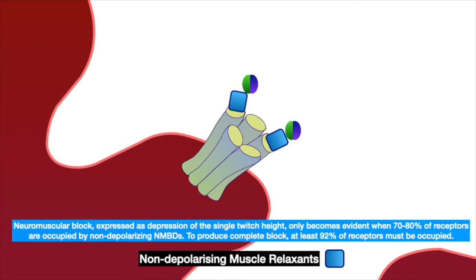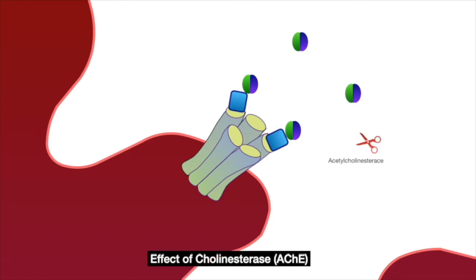The binding of antagonist to the receptors is dynamic with repeated association and dissociation. If the concentration of acetylcholine is increased, it has a higher chance of occupying the receptor sites than the antagonist. However, cholinesterase keeps splitting acetylcholine, tilting the balance in favor of non-depolarizing blockers as long as it binds to the receptor firmly.